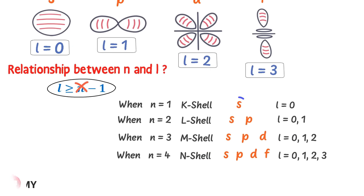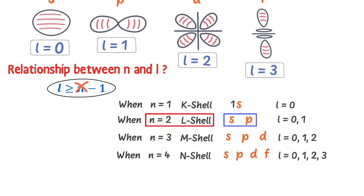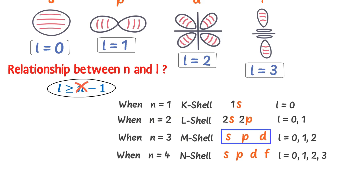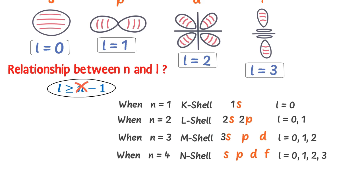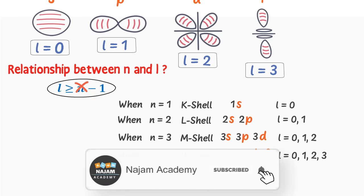Also note that this s is the subshell of n equal to one, i.e., K shell, so I put one with s. This s and p are the subshells of n equal to two, i.e., L shell, so I put two with s and two with p. These s, p, d are the subshells of n equal to three, i.e., M shell, so I put three with s, three with p and three with d. These s, p, d, f are the subshells of n equal to four, i.e., N shell, so I put four with them.